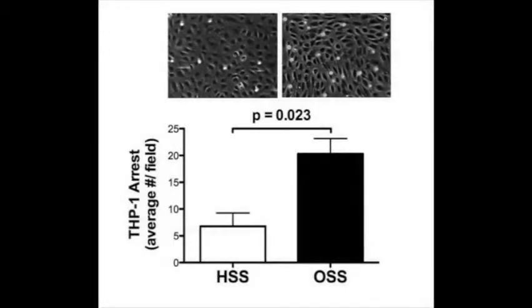Here, we demonstrate data depicting THP1 adhesion to Hake monolayers stimulated with TNF-alpha and conditioned under either a steady high wall shear stress of 15 dynes per centimeter squared or an oscillatory shear stress of 0 plus or minus 5 dynes per centimeter squared.